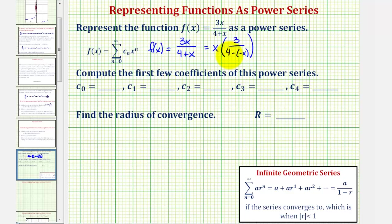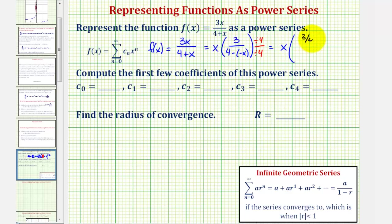Now we're getting close, but notice the denominator must be 1 minus r, and right now we have a 4. We need this 4 to be a 1, so we'll divide the numerator and denominator by 4. This gives us x times 3/4, divided by 1 minus negative x over 4.